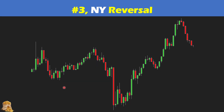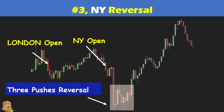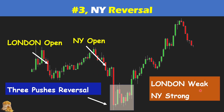After seeing the first type of New York reversal using the V-reversal, let's look at the second example. We have the London open and New York open. The market didn't move much up or down, but suddenly there's a downtrend. However, this downtrend is followed by three pushes and the market doesn't go down even further — instead it goes back up. This is the second type of reversal: three pushes. Whenever you see three pushes and the market doesn't go even further, you should realize it could be a reversal pattern. Comparing to the previous example, the market goes back up even higher than the previous London open, because if London is weak, the New York reversal will be strong.